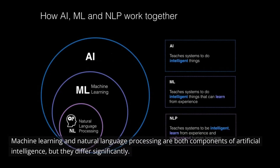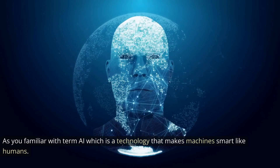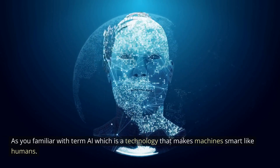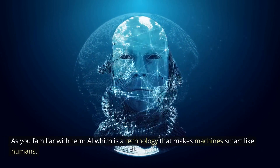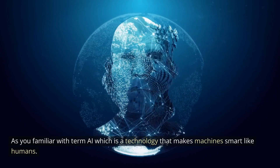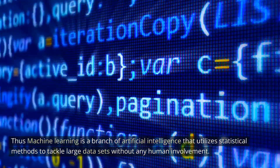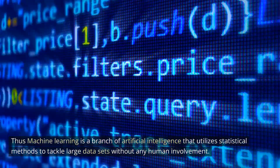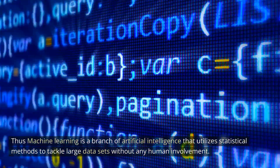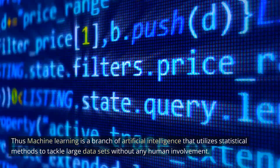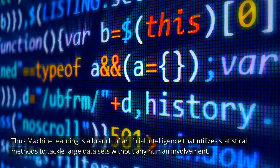Machine learning and natural language processing are both components of artificial intelligence, but they differ significantly. As you may be familiar, AI is a technology that makes machines smart like humans. Machine learning is a branch of artificial intelligence that utilizes statistical methods to tackle large datasets without any human involvement.